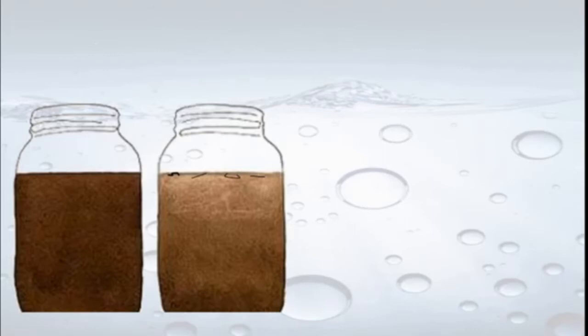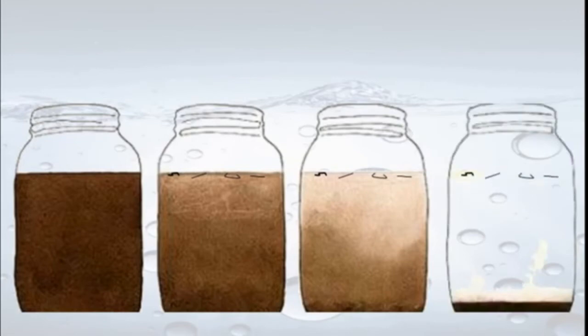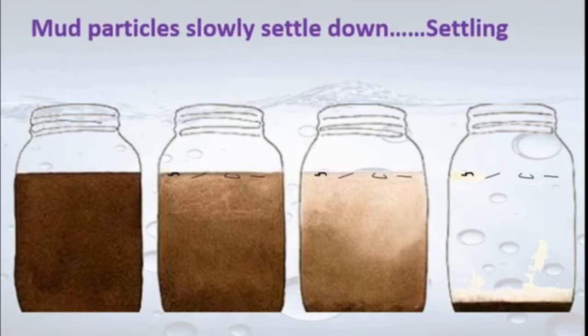We keep the water undisturbed and the water becomes clearer. The heavy particles are depositing at the bottom of the jar. After some time, the lighter rubbish like twigs and leaves are floating, while the heavy soil particles are settled down. This process is called settling.